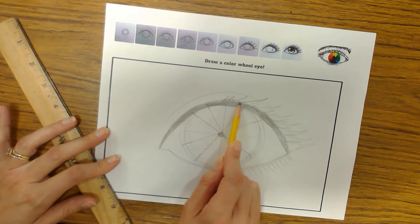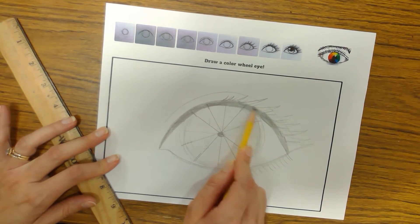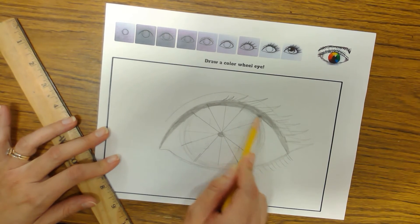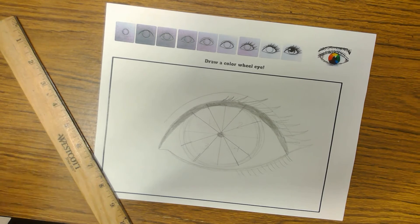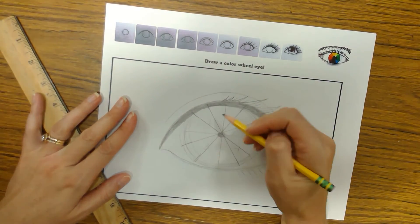And then the rest is to sharpie your pencil lines, erase any pencil lines that you may see, and then color in that baby using the primary, secondary, and tertiary colors.